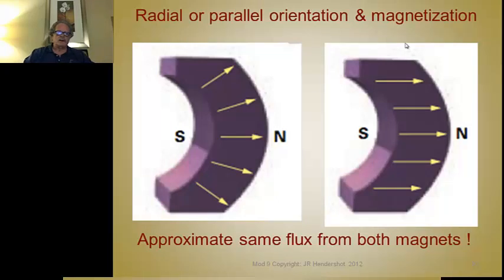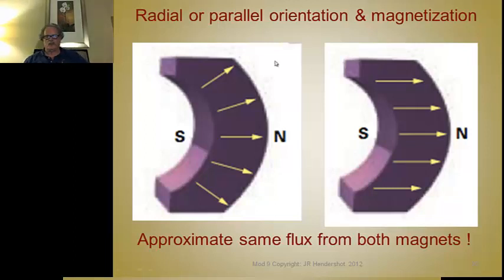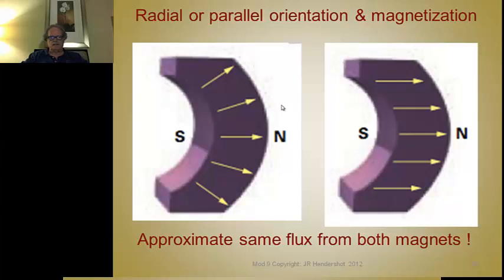Now let's talk about magnets — hard materials. Once you magnetize a hard material, it retains a residual flux, and there's polarity associated with magnetization, just as with soft materials — north and south poles. How those poles are oriented is very important in permanent magnet configurations. A magnet consists of millions of tiny little magnets held together either by a bonding method or by sintering, where they're heated to a temperature that fuses them together.